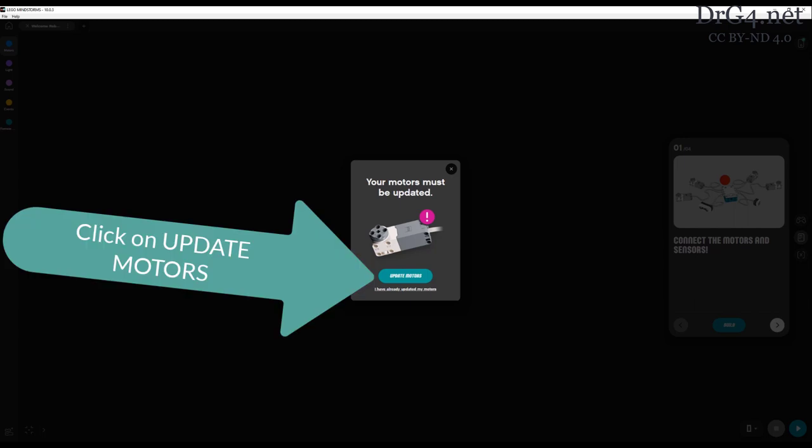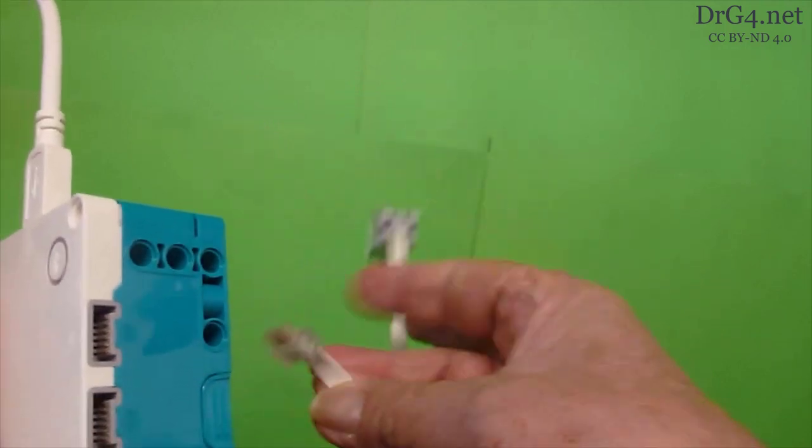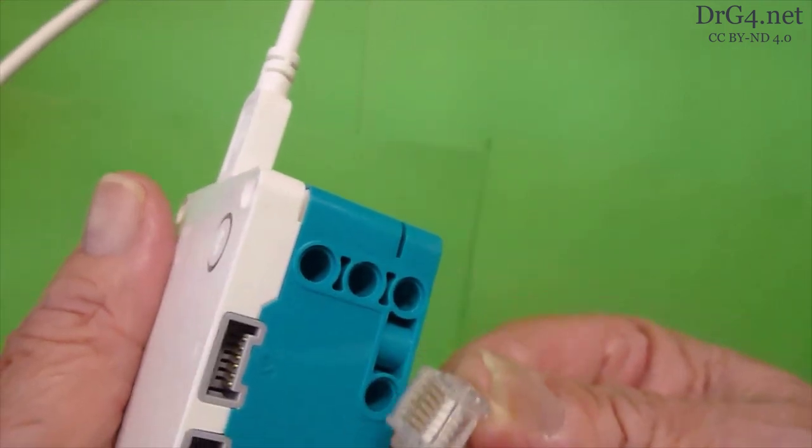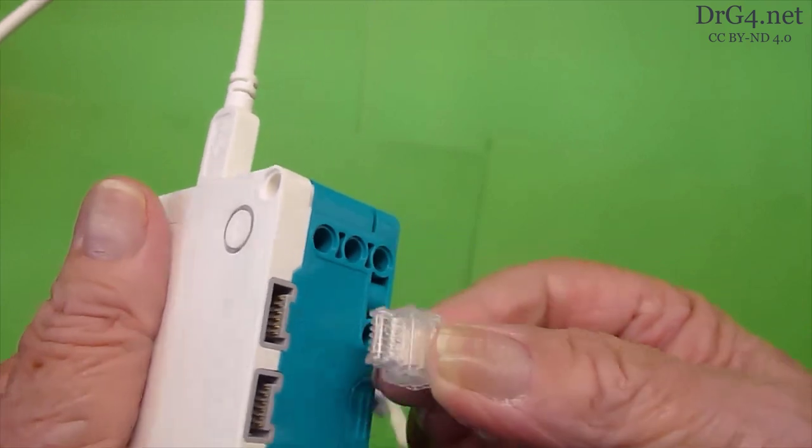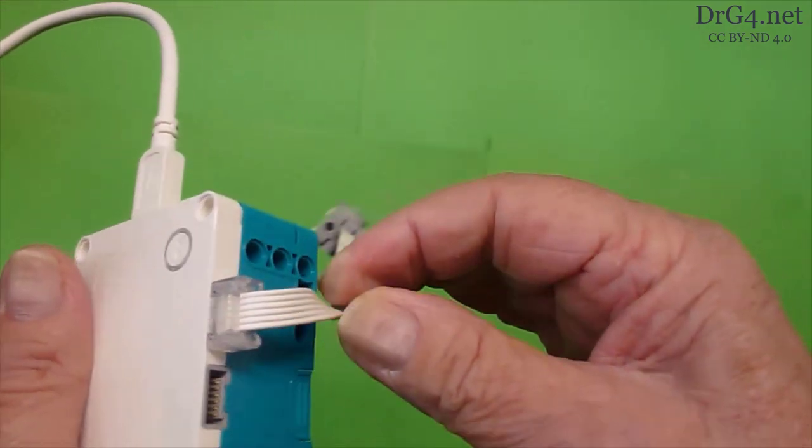But the motors also have to be updated. So we click on Update Motors. We've got to add the motors into our computer hub. We put these in the two connections nearest the connection to the computer.